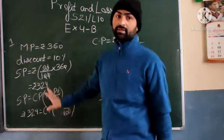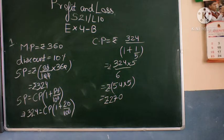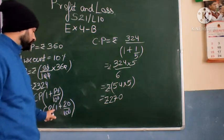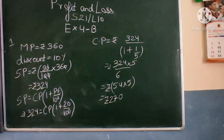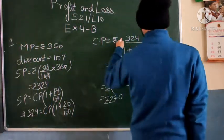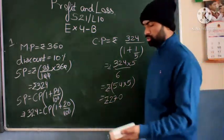SP is calculated as Rs. 324. Then what we have done is used the formula for calculating selling price using cost price and profit percent. We already have the selling price, so we put the value — cost price we don't know, so we put CP only, and profit percent is 20%, so we put 20/100. So 1 plus 1/5 is 6/5 — you have already done this in class 6 using addition of fractions. So you can do it like this and solve. Try more questions of the same pattern.